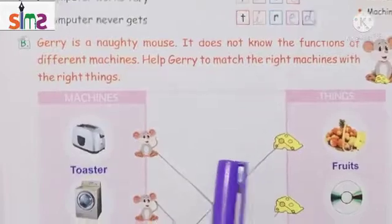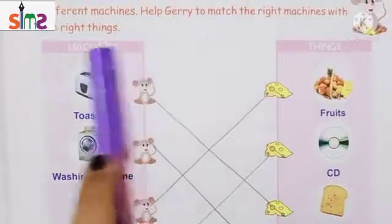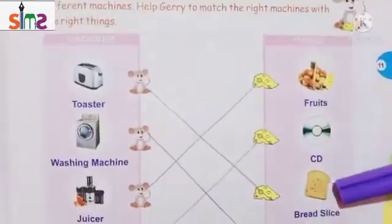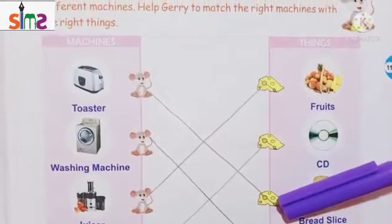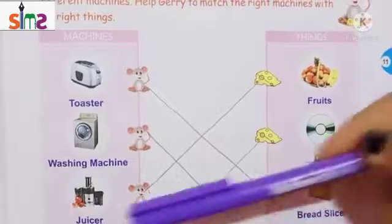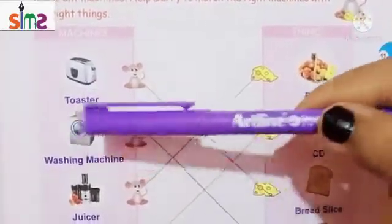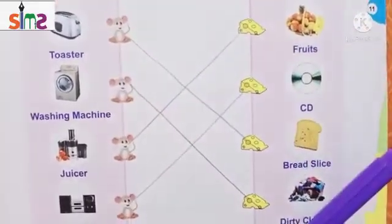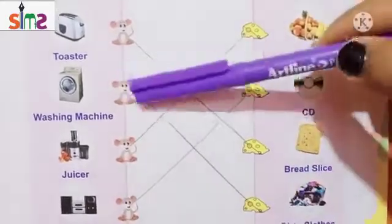Now let's start doing this matching. Our first machine is the toaster. Next machine is the washing machine — the washing machine is for washing dirty clothes. We will match the washing machine with dirty clothes.